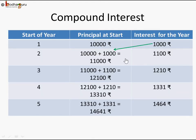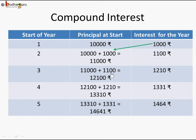This is the table we derived last time. 10,000 is the principal for year one, interest is 1,000 rupees. For year two the principal increases to 11,000, and applying the simple interest formula gives 1,100 rupees. For year three the principal is 12,100, giving interest of 1,210 rupees. Each year's interest is ploughed back into the principal for the next year's calculation.